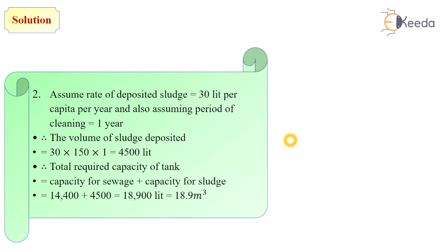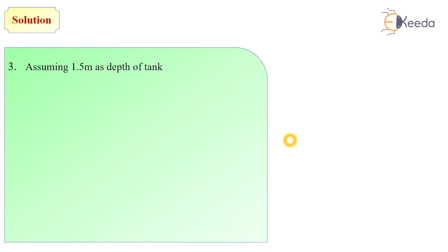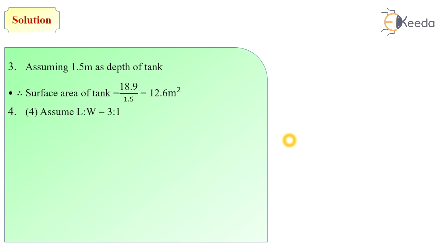The overall capacity of septic tank is 18.9 cubic meters. We assume the depth of tank, which is in the range of 1.2 to 1.8 meters — in this problem we assume it as 1.5 meters. Then from these two values we calculate the surface area of tank, which equals volume divided by depth: 18.9 divided by 1.5 equals 12.6 square meters. We assume length to width ratio equal to 3 to 1, meaning the length is 3 times its width.